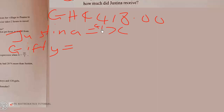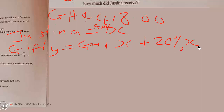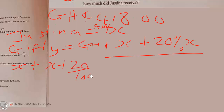If Justina has X cedis, then Gifty will get X plus 20% of X. Since the two amounts they receive must total 418, we have X plus (X plus 20% of X) equals 418.